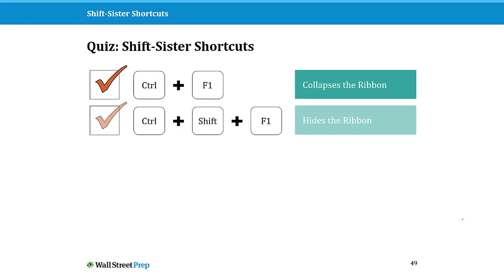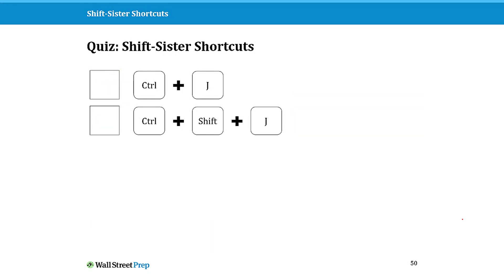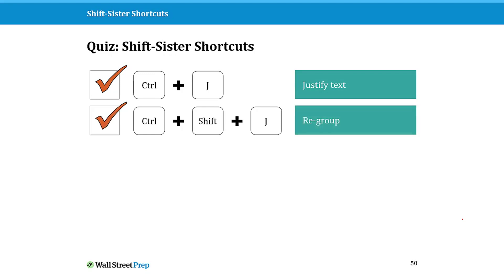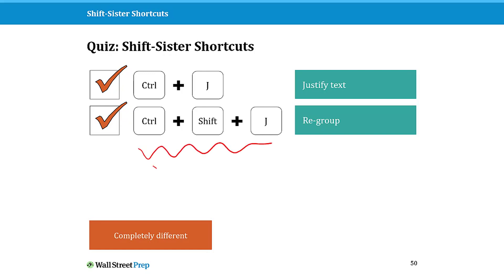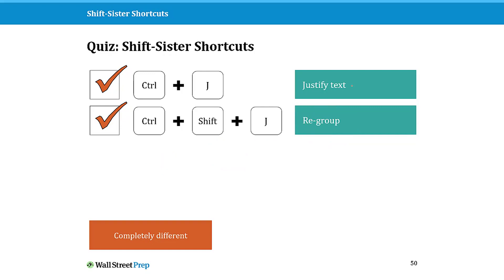So that's Ctrl+F1 to collapse and Ctrl+Shift+F1 to hide your ribbon. Now, if Ctrl+J is to justify text, what do you think Ctrl+Shift+J would do? In this case, it regroups a set of objects. So Ctrl+Shift+J actually pairs with Ctrl+G and Ctrl+Shift+G for group, ungroup, and regroup — a way to quickly reform a group of objects without selecting them all again. This is an example of sometimes a shift sister shortcut doing something completely different.